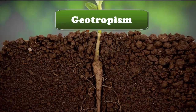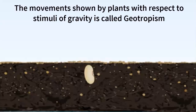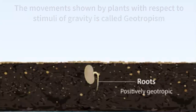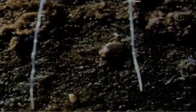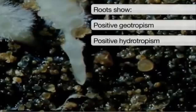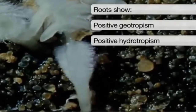Geotropism: the movements shown by plants with respect to the stimuli of gravity is called geotropism. Roots are positively geotropic. Roots show positive geotropism and positive hydrotropism.